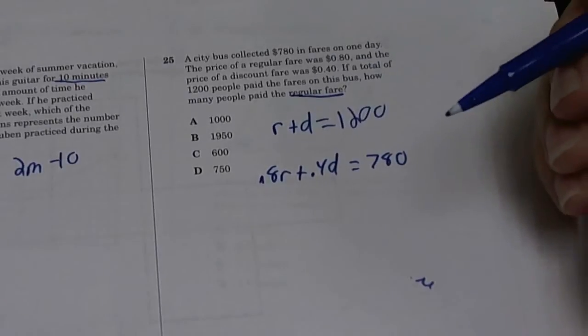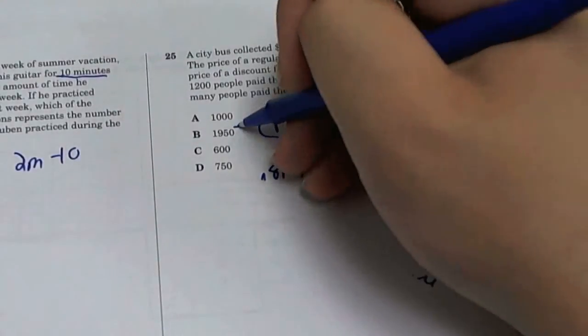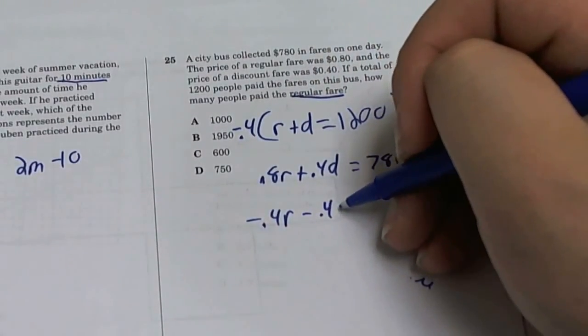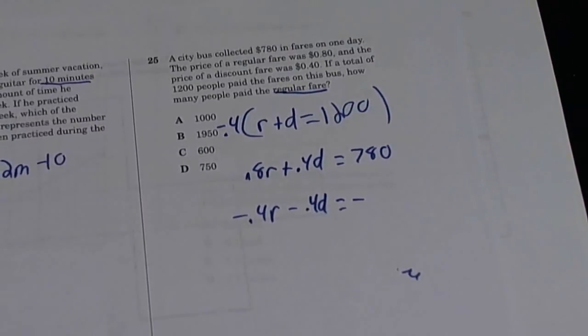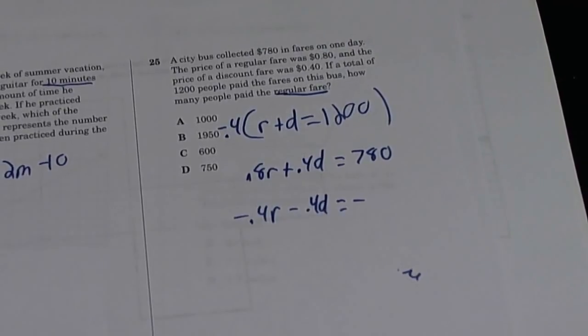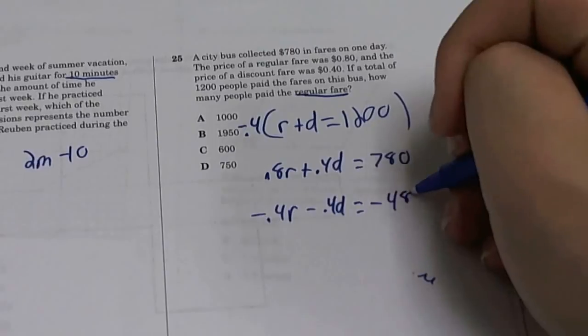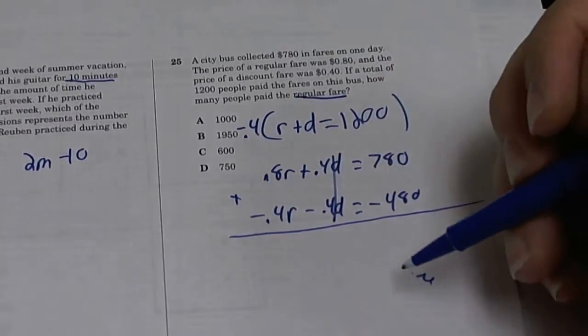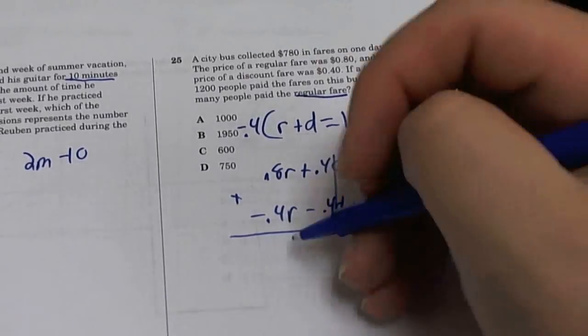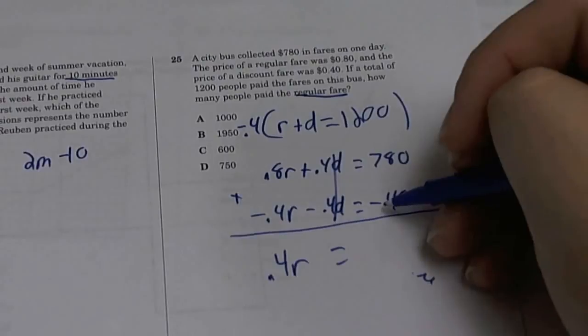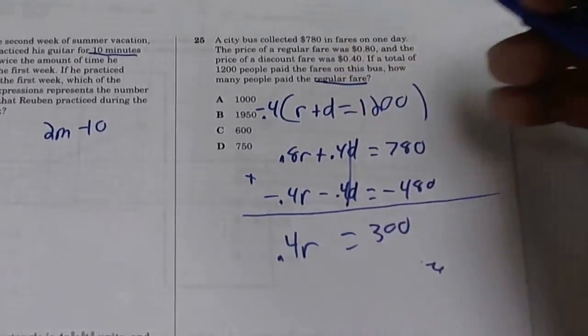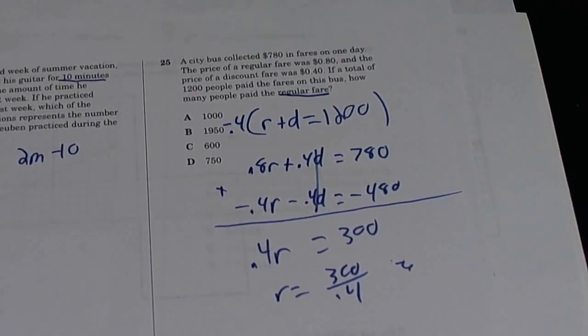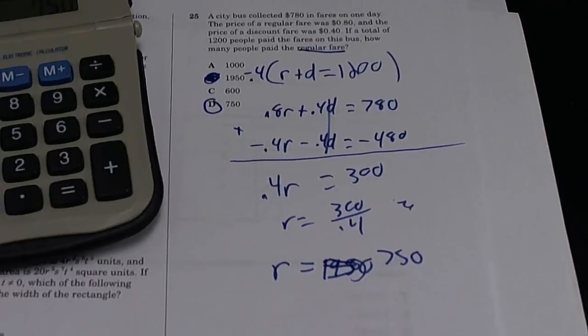So we want to cancel out our Ds. So how do you cancel out your Ds? Multiply this by negative 0.4. You get negative 0.4R minus 0.4D equals negative - let's see, 1,200 times 0.4 is negative 480. Now we add, because we're trying to subtract our Ds, our discounts. So these two will cancel. 0.8R plus negative 0.4R is 0.4R. 780 minus 480 is 300. So R is equal to 300 divided by 0.4. 300 divided by 0.4 is equal to 750. So the answer is D, 750.